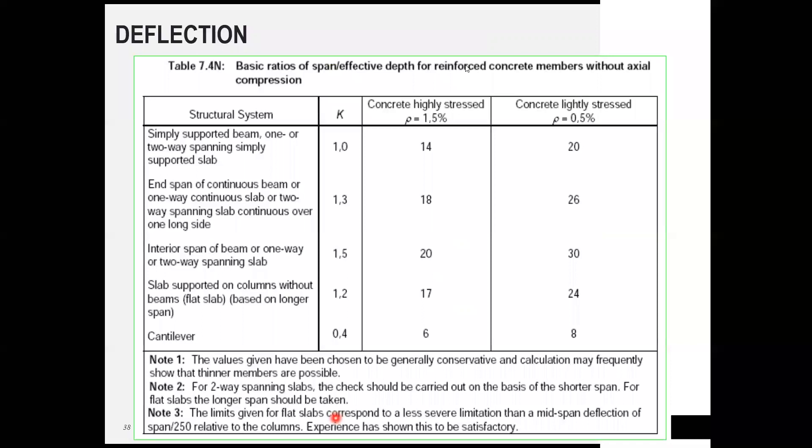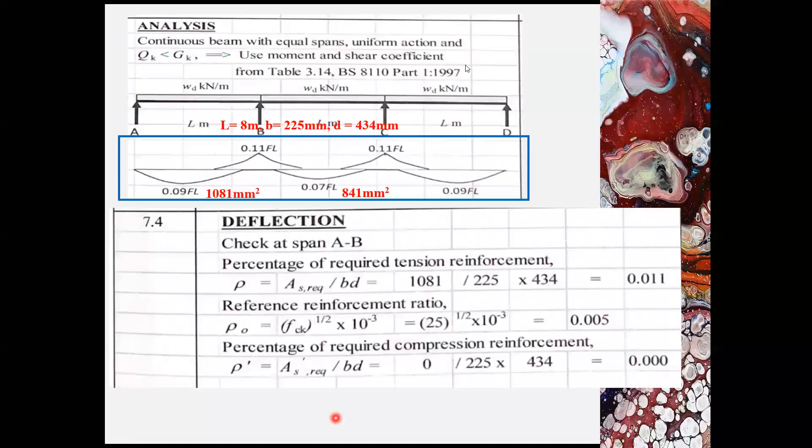This is Table 7.4, basic ratios of span over effective depth for reinforced concrete members without axial compression. So now we can start on the deflection check.